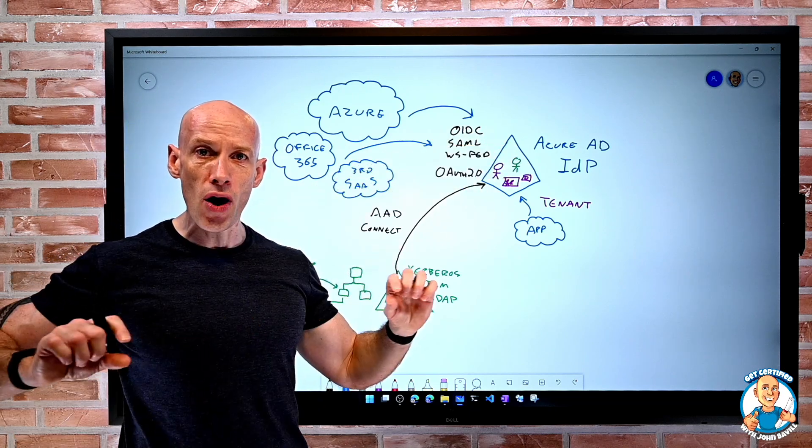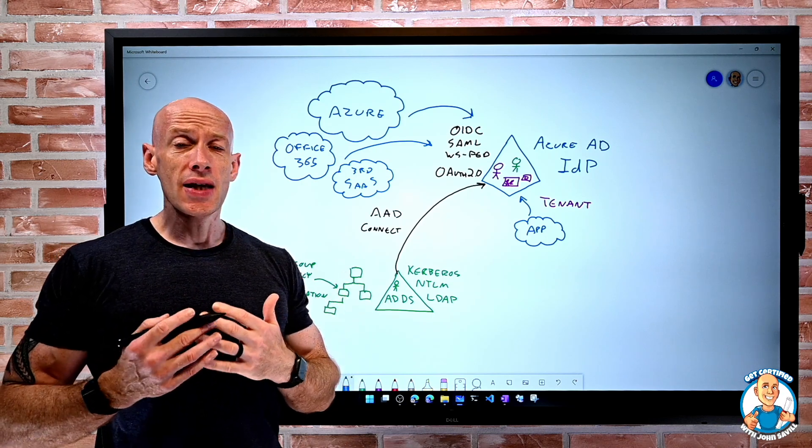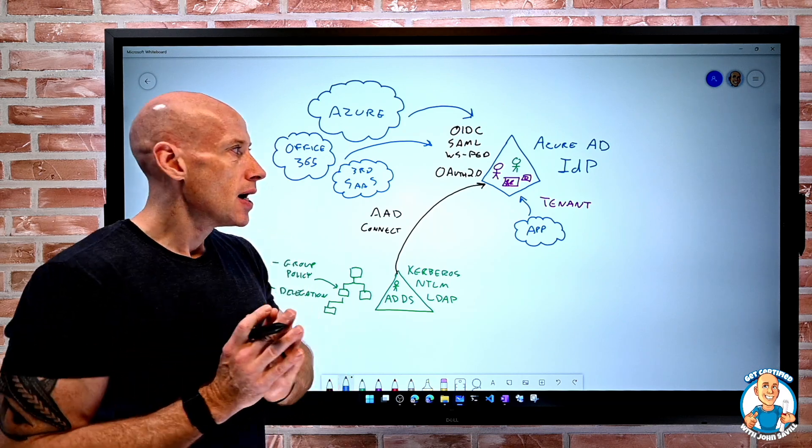It's also about all those applications coming together, giving me a central point of governance. In the old days, the network was our security perimeter. In the cloud, that shifts to the identity.